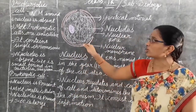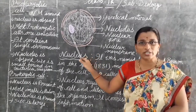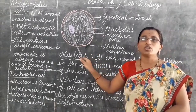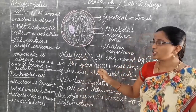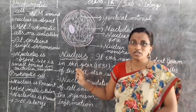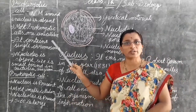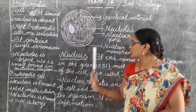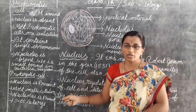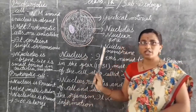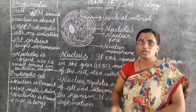The nucleolus is present in eukaryotic cells and absent in prokaryotic cells. Size is larger in eukaryotic cells and smaller in prokaryotic cells. The nuclear membrane is present in eukaryotic cells and absent in prokaryotic cells.